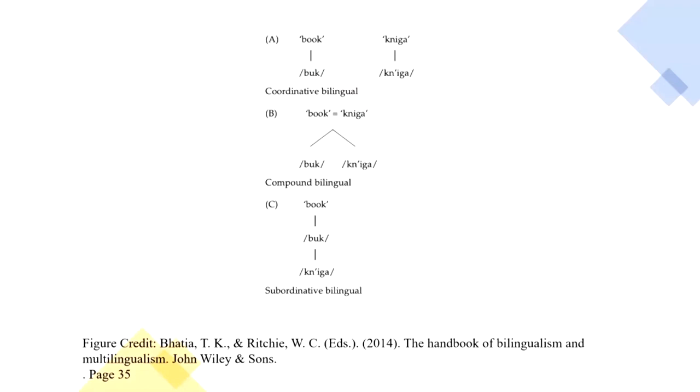In a compound bilingual, the individual accesses the same concept through two different routes. The understanding is that these two concepts are the same and are probably housed in the same place, but accessed by two different routes. For example, the concept of an apple is accessed by the word 'apple' as well as the Hindi word for apple, for a Hindi-English bilingual.